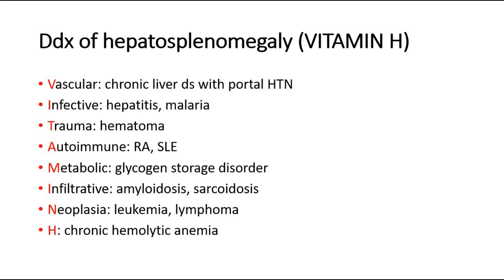Vascular causes such as chronic liver disease causing portal hypertension; Infective causes like hepatitis or malaria; Trauma causing hematoma; Autoimmune disease like rheumatoid arthritis or SLE; Metabolic conditions like glycogen storage disorder; Infiltrative disorders such as amyloidosis or sarcoidosis; Neoplasia such as leukemia or lymphoma; and H is for hemolytic anemia.